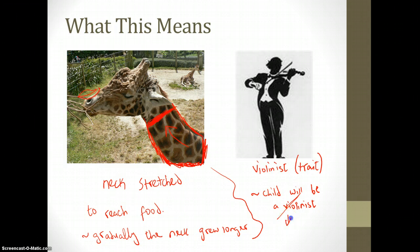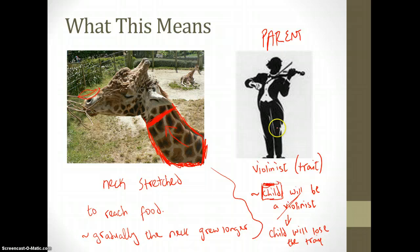his child will lose the trait. So here we have the parent, then we have the child who will be a natural violinist. But if he doesn't practice his violinist skills, then the child of the grandchild of the parent simply will lose the trait.